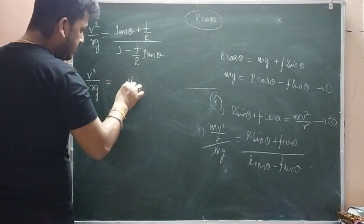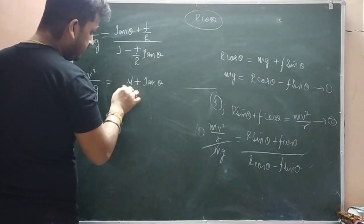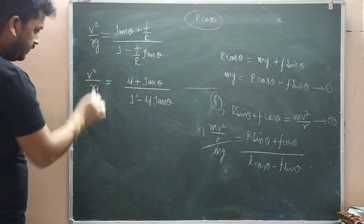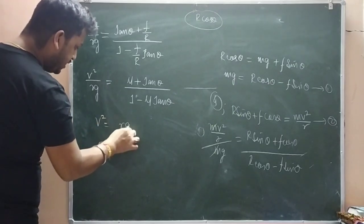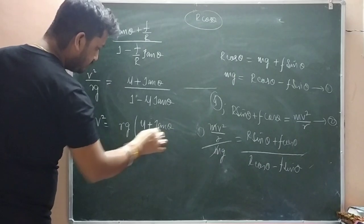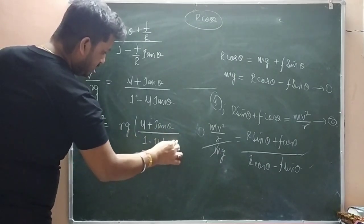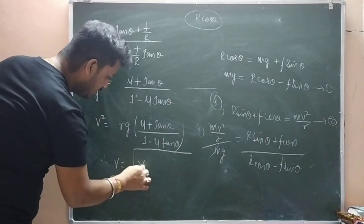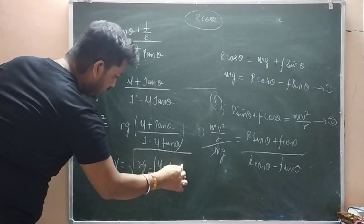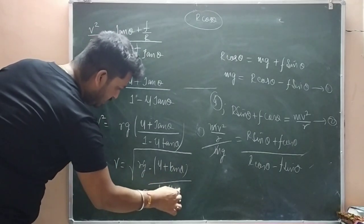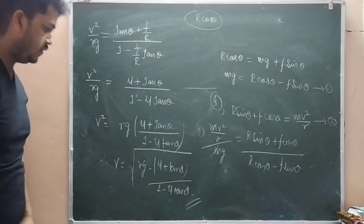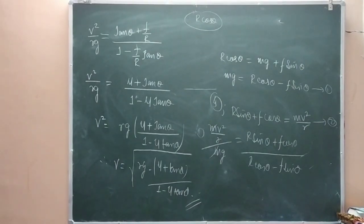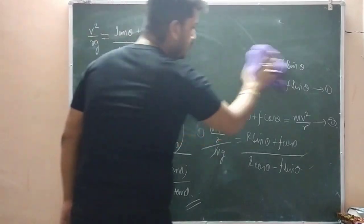v²/rg equals - F by R is coefficient of friction μ - so this becomes (μ + tan θ) divided by (1 - μ tan θ). So v² equals rg(μ + tan θ)/(1 - μ tan θ). Therefore, velocity v equals root over rg(μ + tan θ) divided by (1 - μ tan θ). This is the equation when there is friction.